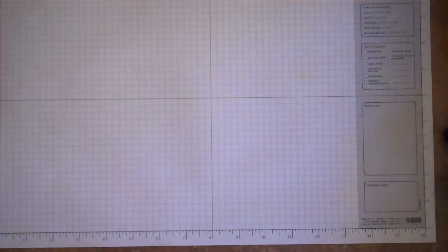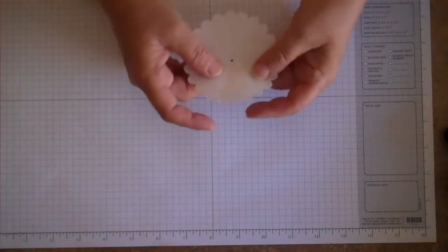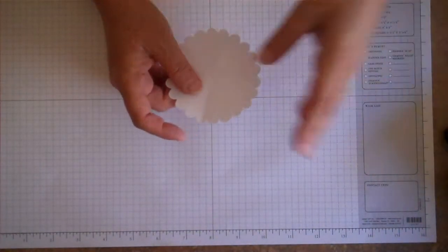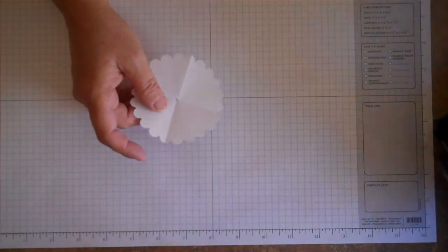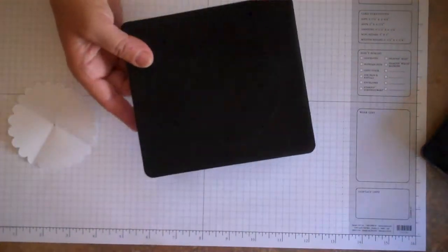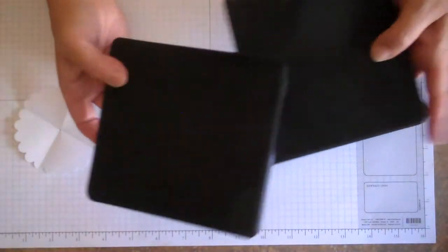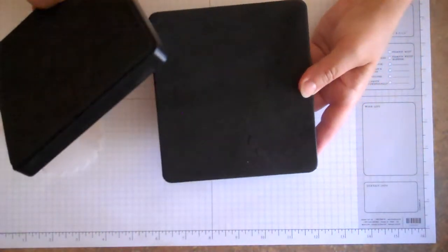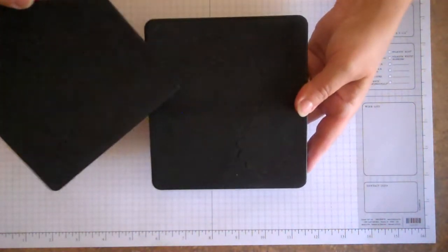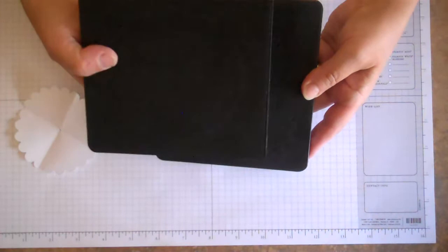So we'll get started. First thing you're going to do is I actually use the Big Shot and the Scallop Circle dies, but you don't have to use those. You can actually use punches but most of the punches are pretty small. So I've actually used the Large Scallop Circle die from Stampin' Up and also the Scallop Circles No. 2 die. It has a small one and a medium sized one on there. It's a little hard to tell on the video probably.